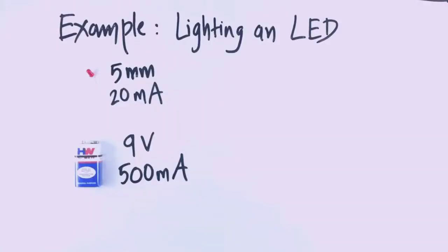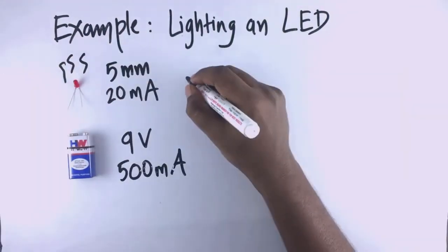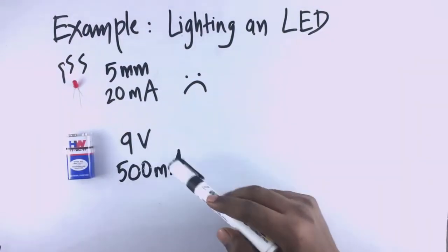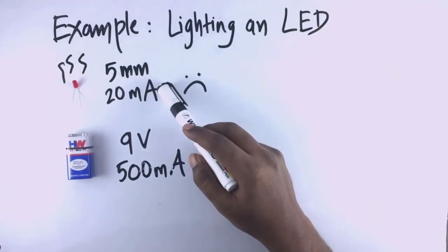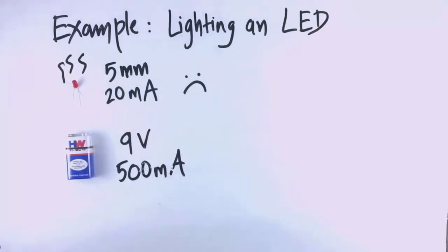Now we will see why exactly the LED burned. This battery supplies about 9V and about 500mA. This LED on the other hand needs only about 20mA to light up. So when 500mA passes through the LED, it burns out.